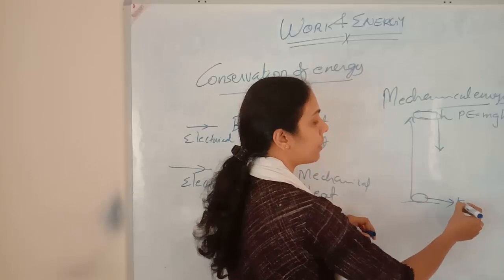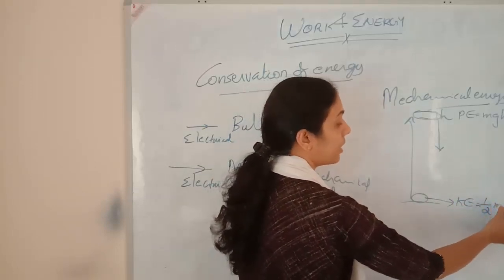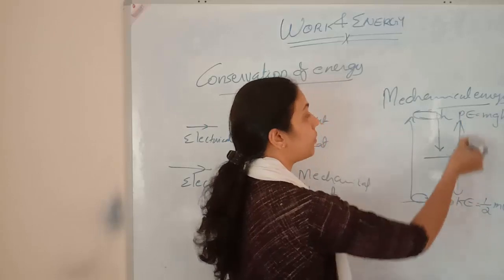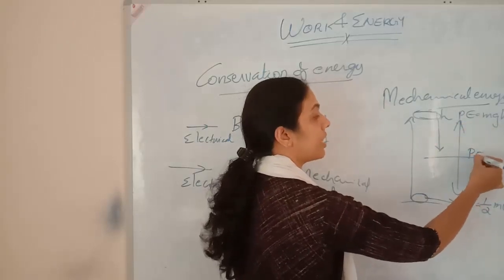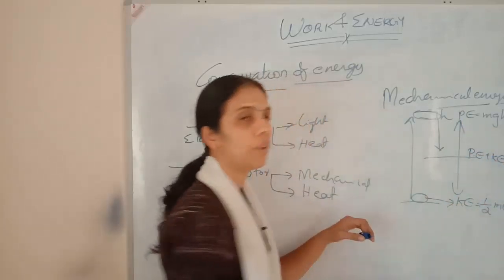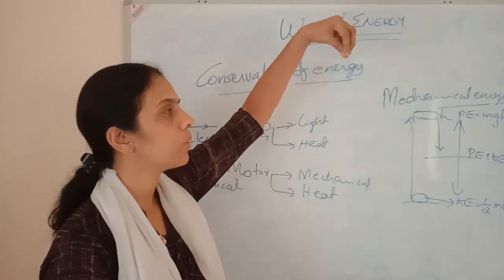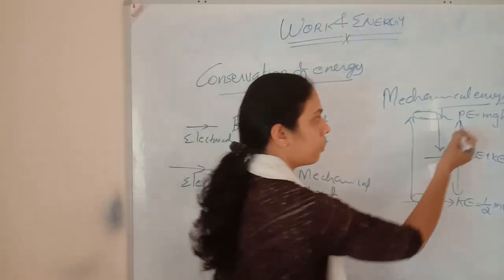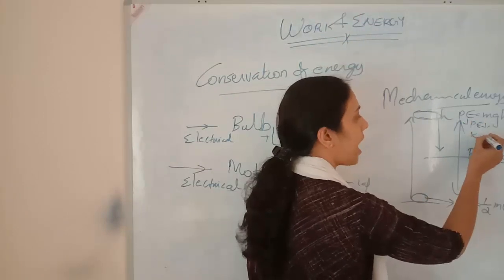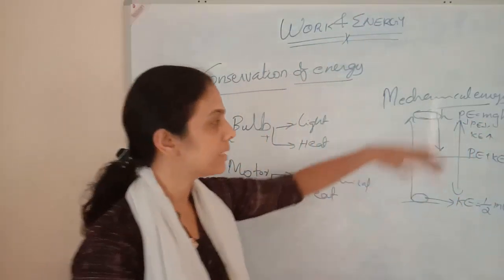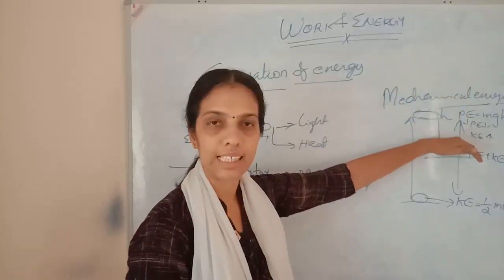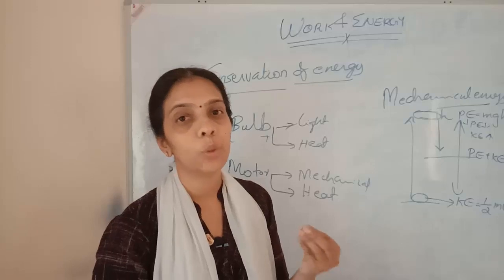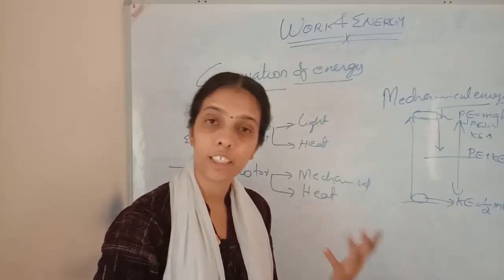At the ground level, the energy will be kinetic energy, which is half mv squared. In between, at all points, both potential energy and kinetic energy will exist. As the object falls from height h, potential energy will be decreasing and kinetic energy will be increasing. When it reaches the ground, height is zero, and total energy converts entirely into kinetic energy.